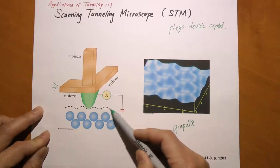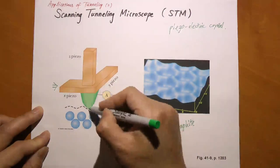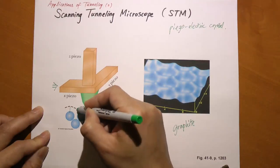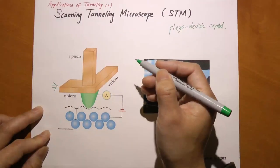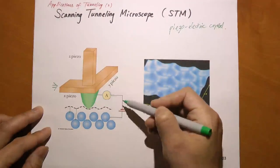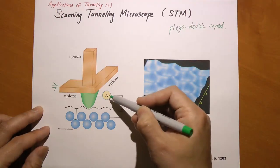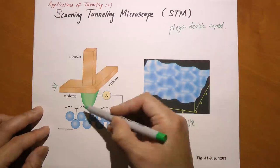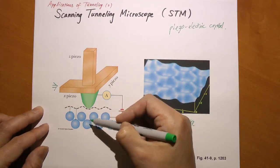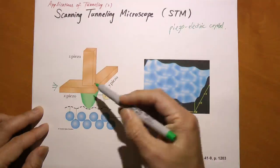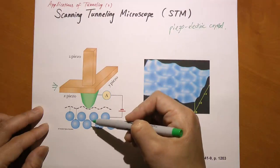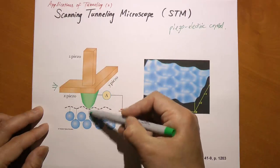We're going to move along this line, and as it moves along this line, the tip sometimes gets pretty close to the atom, sometimes gets pretty far from the atom. You put a current loop here - you can measure the current. Now the current normally should be zero because there is an air gap between here and there. But remember, there is a tunneling effect, so you can think of this as a potential barrier.